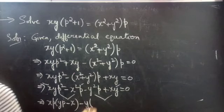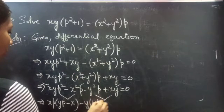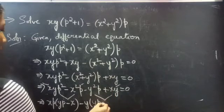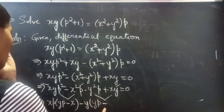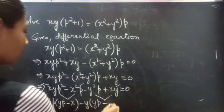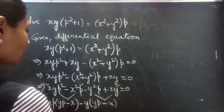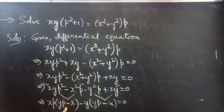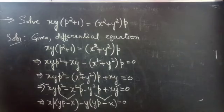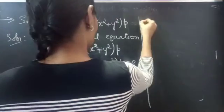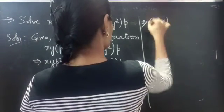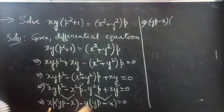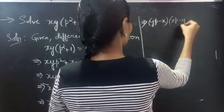Then take y common from the next two terms: minus y times yP minus x. Since minus into minus gives plus, you will get minus y times yP minus x. So y into x is xy equals to 0.